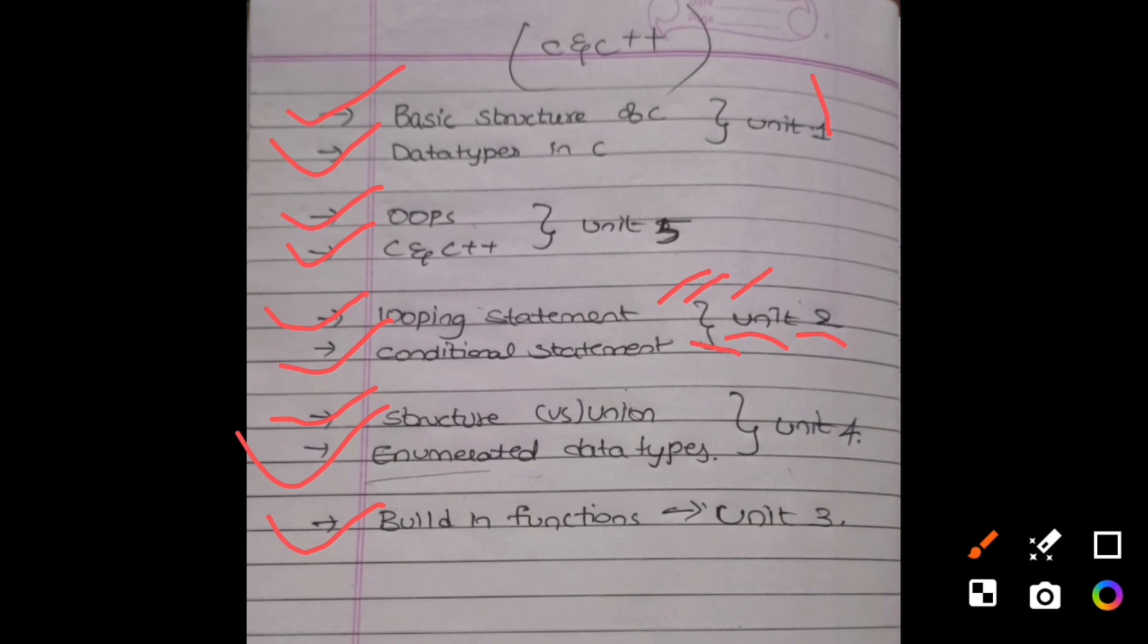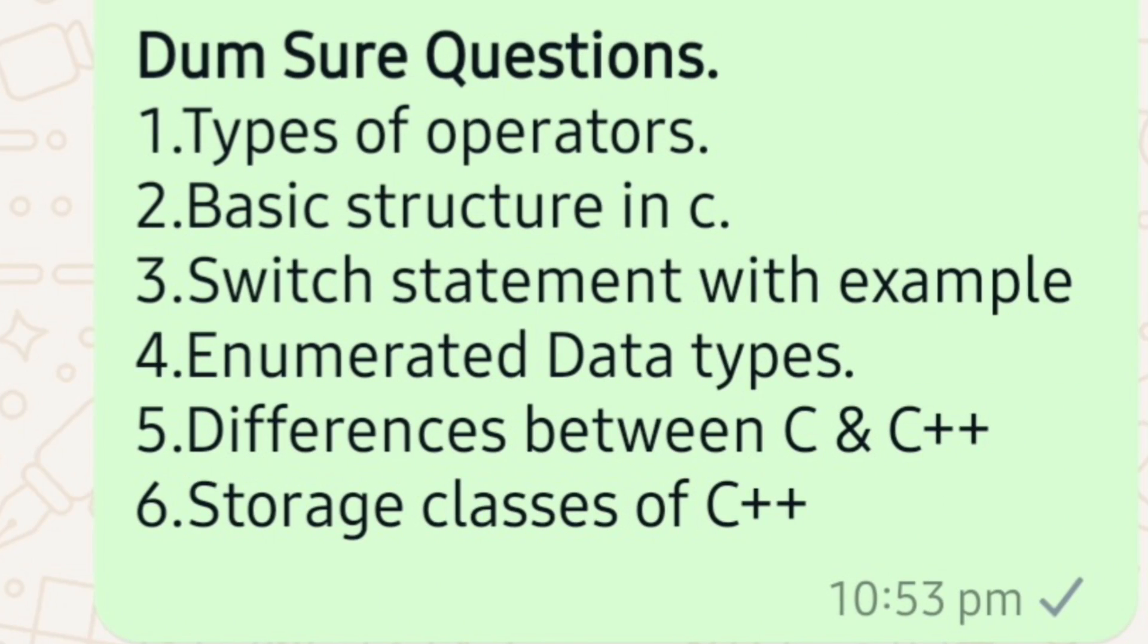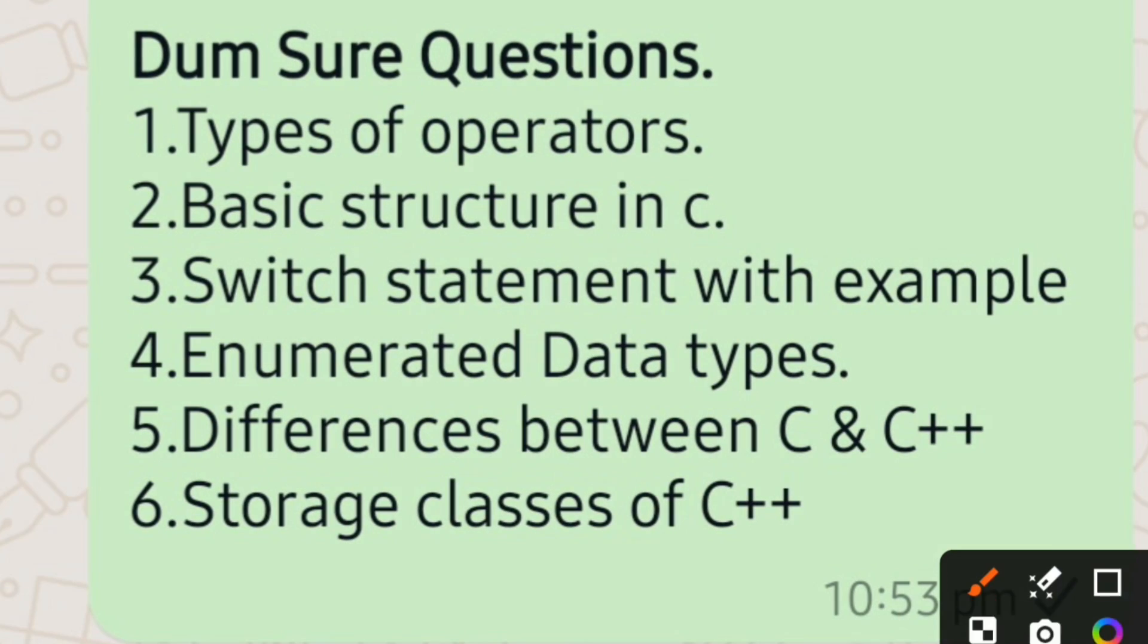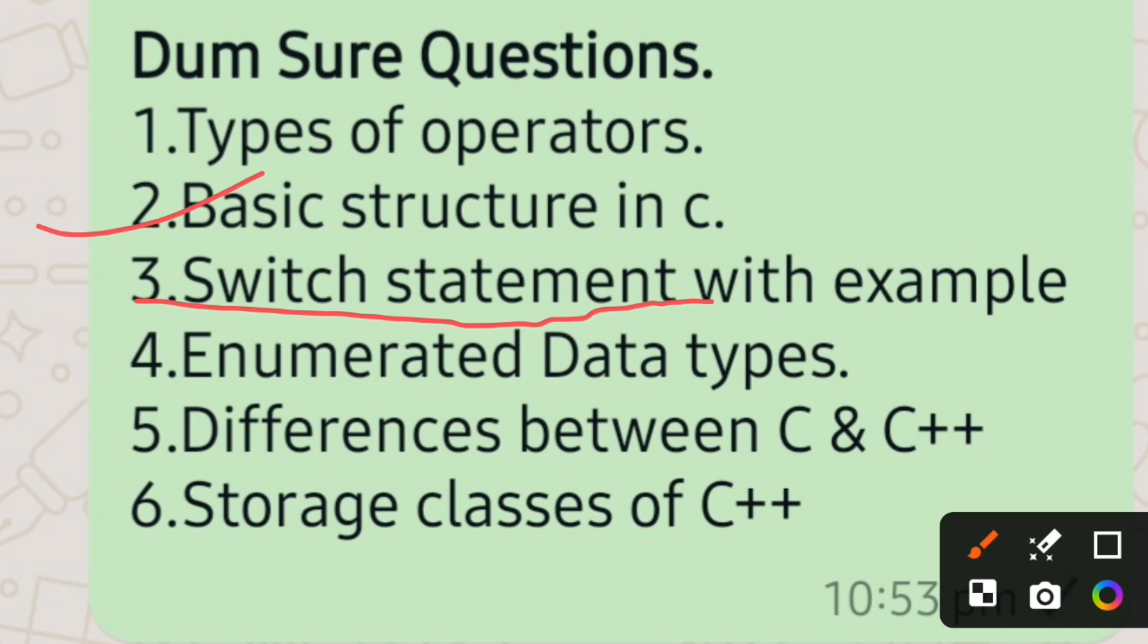I have given only nine questions for today's examination and I will show some of the damn sure questions also. Types of operators means arithmetic operator, relational operator. Explanation videos I have already done. Basic structure of C, switch statement, enumerated data types, differences between C and C++ we have discussed.